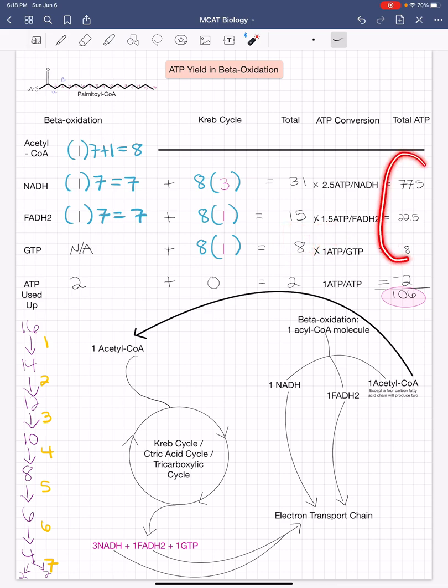So next, we just add all the total numbers of ATP produced minus the ATP that was used up. So we subtract that and we get a total of 106 molecules of ATP produced for this molecule.